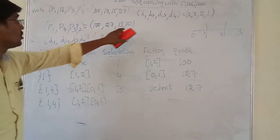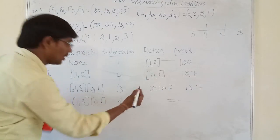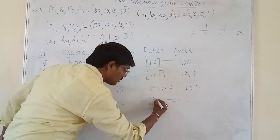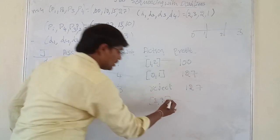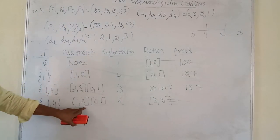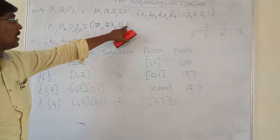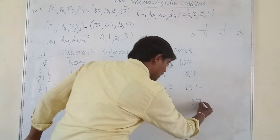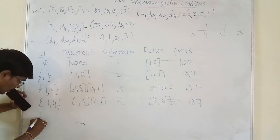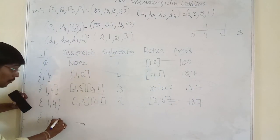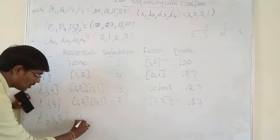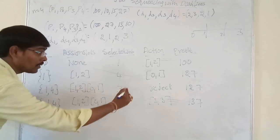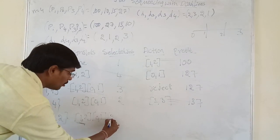Next we select Job 2. The deadline for Job 2 is 3, so the assigned slot is (2, 3). Slot (2, 3) is free, so we simply assign that slot and get a profit of 10. The total profit is now 137. The solution contains Jobs 1, 4, and 2, with assigned slots (1, 2), (0, 1), and (2, 3).